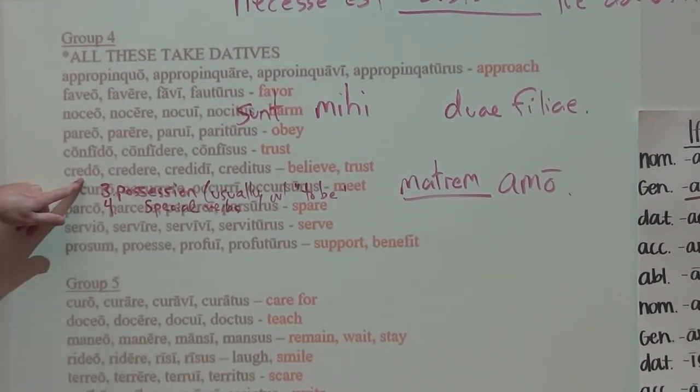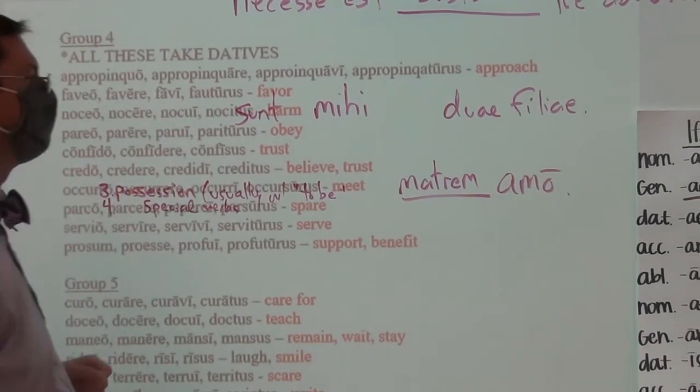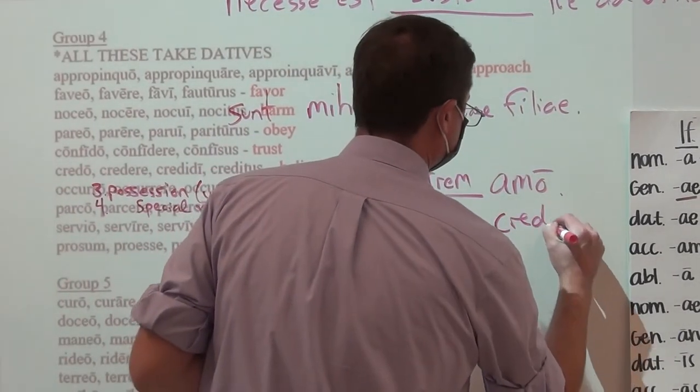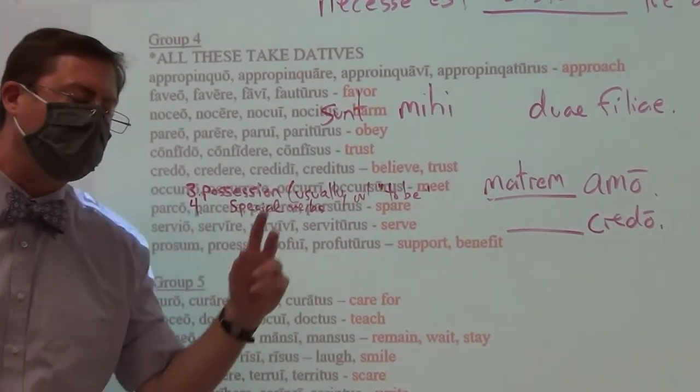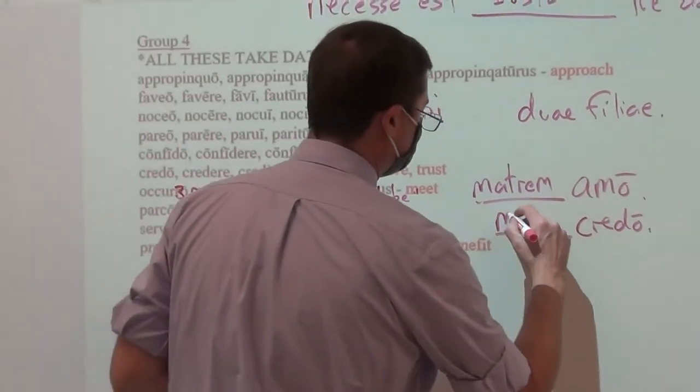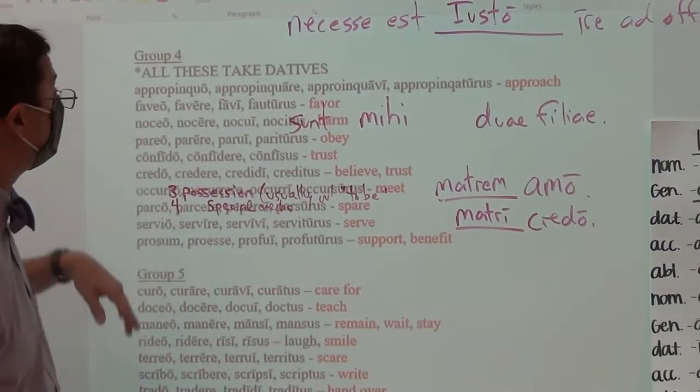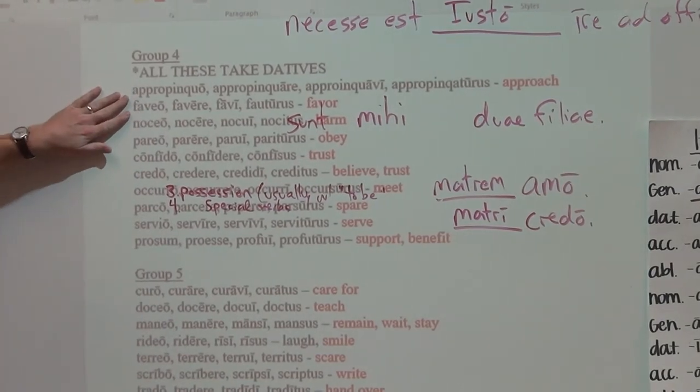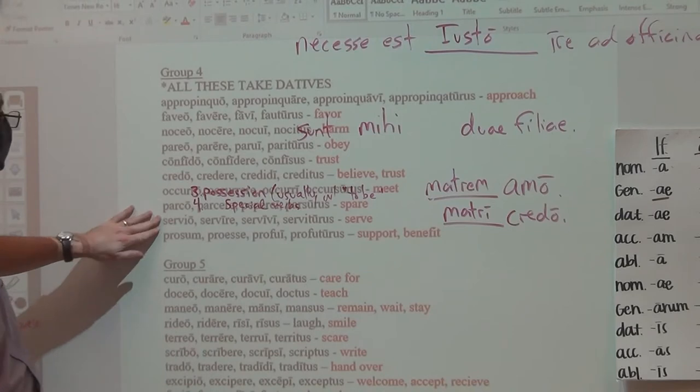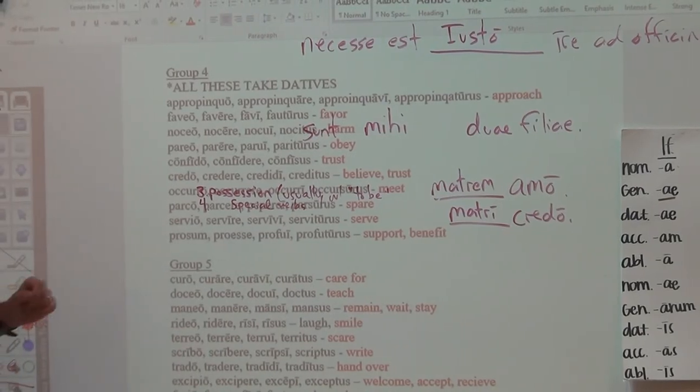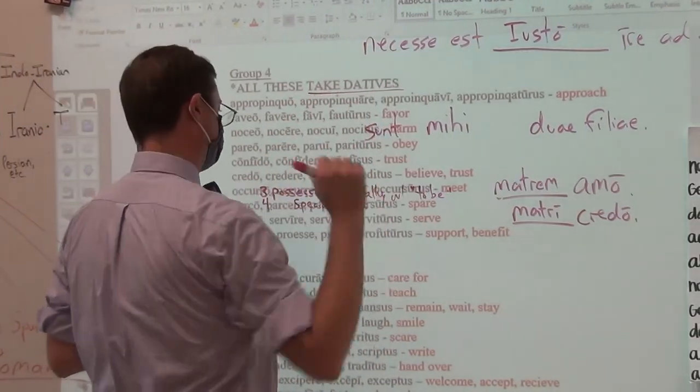But if I were to take one of these, and let's go with trust. Credo. From credo, credere, credidi, creditus, I cannot trust my accusative mama. The only kind of mama I can trust is my dative mama. Matri. And so you can see that all of these verbs, appropinquo, faveō, noceō, pāreō, confīdō, crēdō, occurrō, parcō, serviō, prōsum, all of them will have a dative object and that's what it means when it says takes datives.